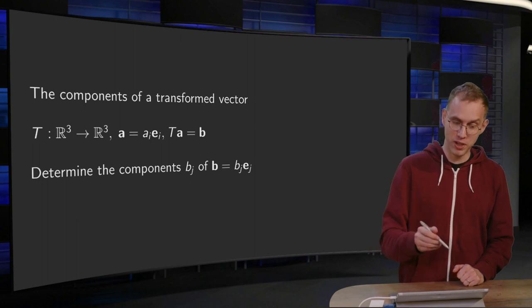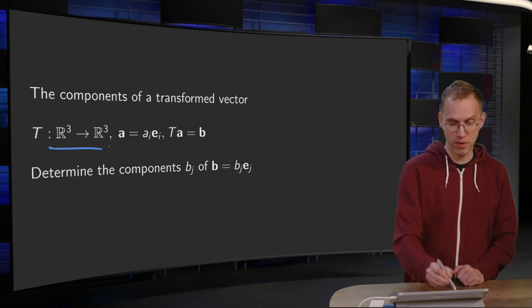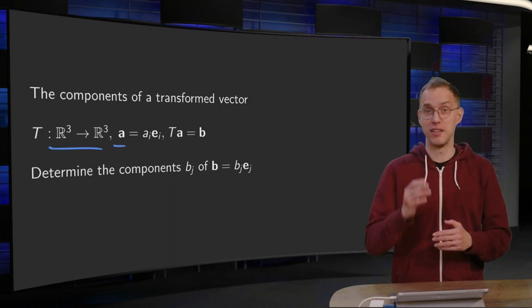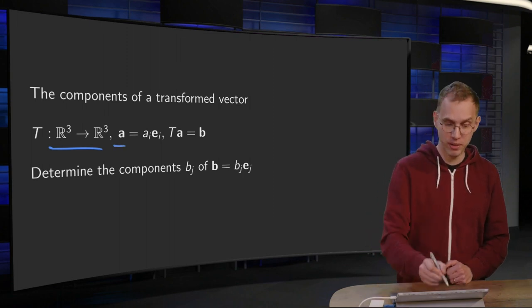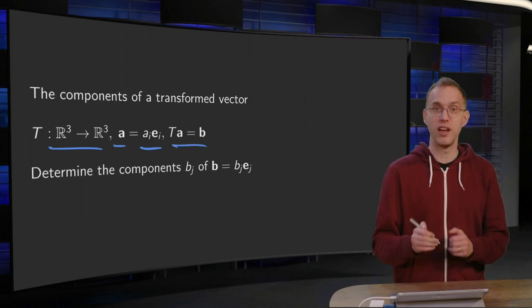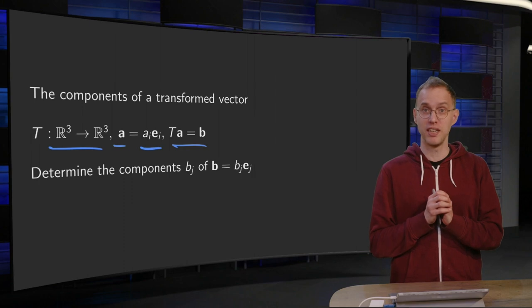So what's the situation? We have a tensor from R3 to R3. We have some general vector A, we can expand it in the standard basis E1, E2, E3. We have some B, and we say T of A, the image of A, is B.